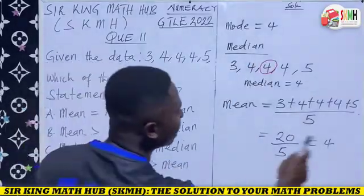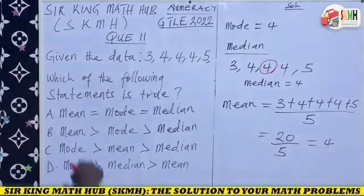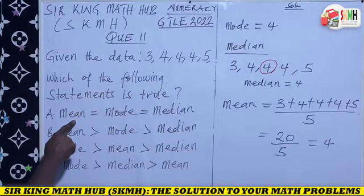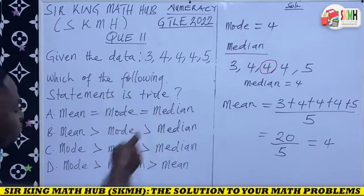From this, we can conclude that the mean equals the mode, and the mode equals the median. So the right answer is A: mean = mode = median.